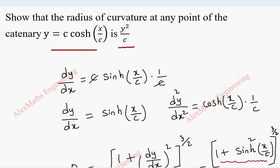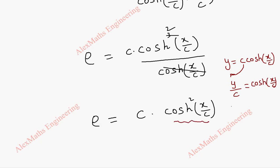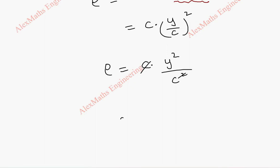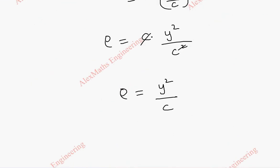Now, from the original curve, y equals c·cosh(x/c). We rewrite this as y/c equals cosh(x/c). When we square this, it becomes (y/c)² equals cosh²(x/c). Substituting into our expression, rho becomes c into y²/c², which gives rho equals y²/c. The question asked us to show that the radius of curvature is y²/c, and here we have obtained the result.